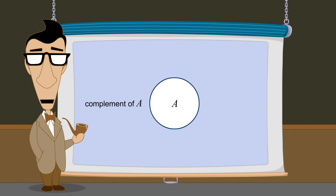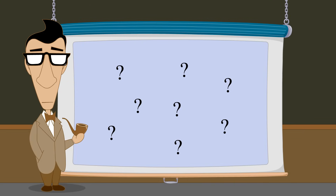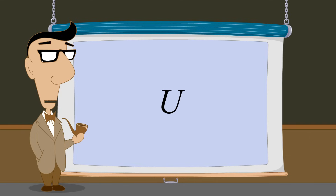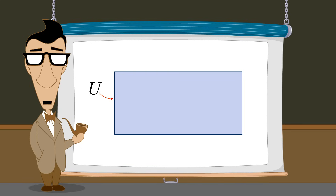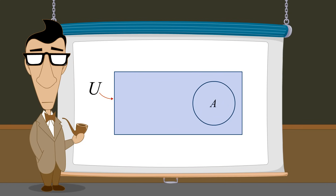So when we say that the complement of a set is the collection of all elements which are not members of that set, we must first agree on what is meant by "all elements." The set of all elements is called the universal set, or the universe, and is typically designated by the capital letter U. We can define set U to be anything we like, as long as all the members of the set whose complement we are taking are elements of U. The complement of set A will then be all the elements of U which are not members of A.